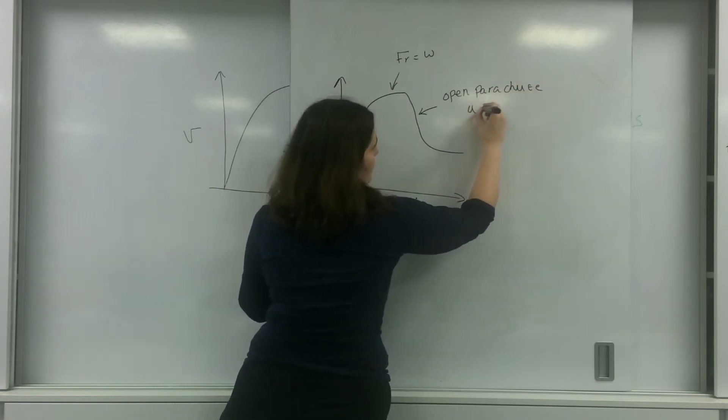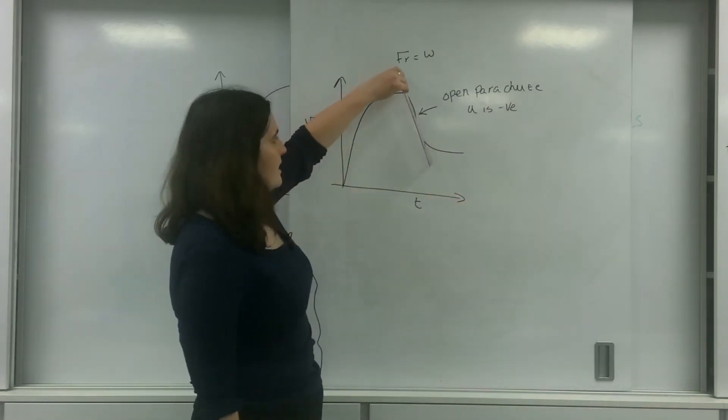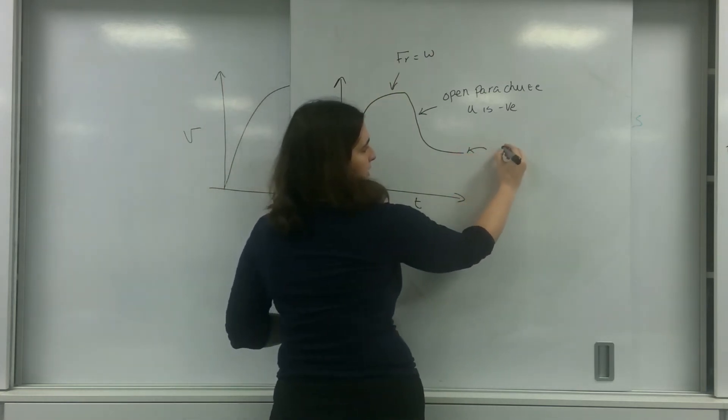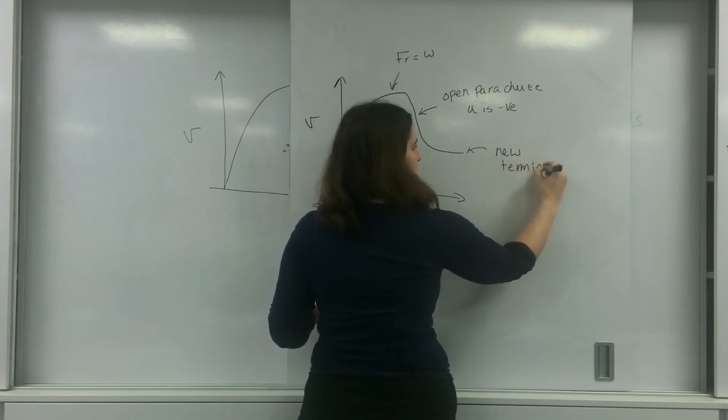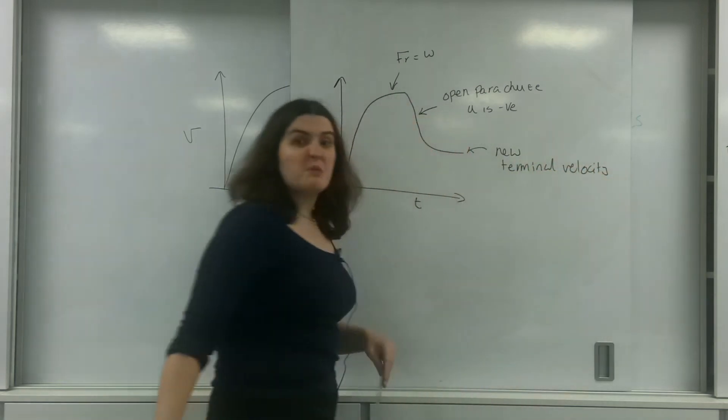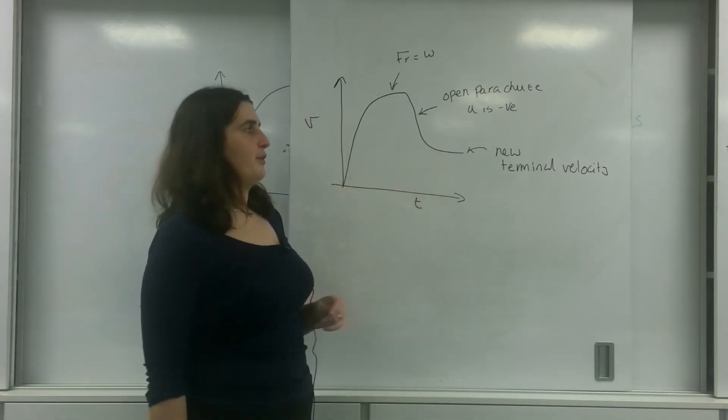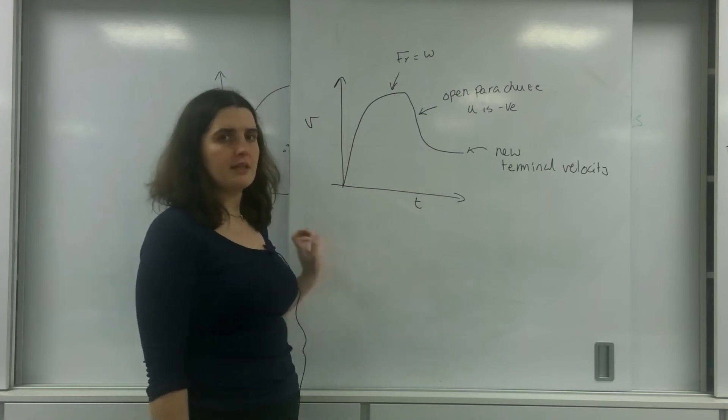And my acceleration is negative. And you can see that by the graph here. Because it is a negative slope. And then here is my new terminal velocity. Which is much, much lower than it was initially. And that's what you're going to be going to the ground with. And that is terminal velocity.